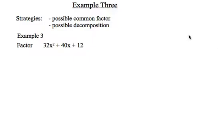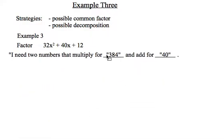Example 3. This one I have three terms so I want to be considering the possibility of a common factor and because it's three terms I also want to consider the possibility of a decomposition problem. So if I blindly stumble into trying to do a decomposition problem I need two numbers that multiply for 384 and add for 40. Yikes!